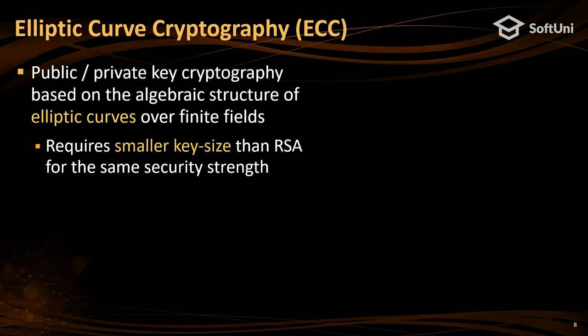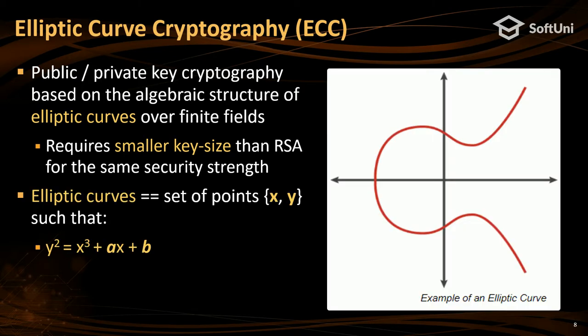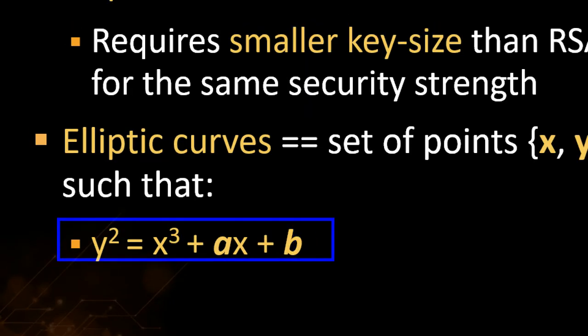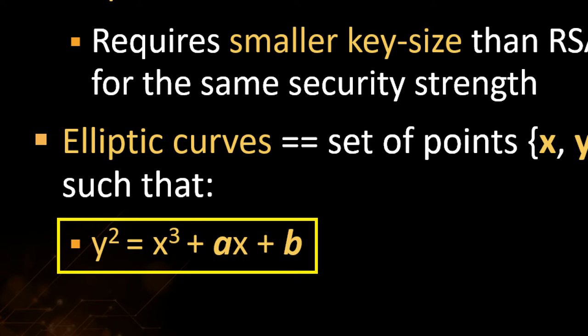ECC is a public-private key cryptosystem based on the algebra of elliptic curves over finite fields, which is just a matrix. It requires significantly smaller key sizes than RSA for the same security strength. Elliptic curves look like a smooth curve, but cryptography doesn't use exactly these curves — it uses their discrete mapping over finite fields. The elliptic curve is just an equation of third degree. Bitcoin uses exactly one such equation, evaluated modulo a large prime, as I'll show on the next slide.